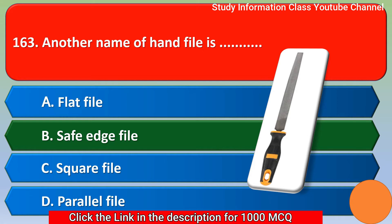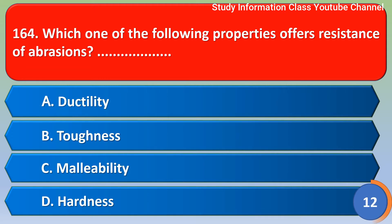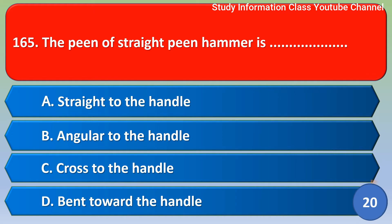Next question: which one of the following properties offers resistance to abrasion? Option A: ductility. Option B: toughness. Option C: malleability. Option D: hardness. The correct answer is Option D — hardness.